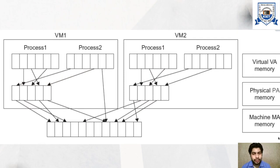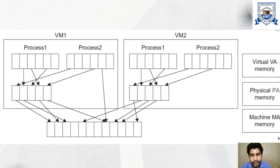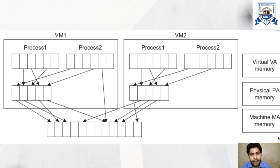This is the diagram of virtual memory mapping. As you can see, the virtual address memory is mapped to a physical page address memory, and then the physical page address memory is again mapped to machine-addressable memory. There are two VMs — first they are mapped with the physical (PA) memory and then mapped with machine memory. That is why it is called two-stage mapping.